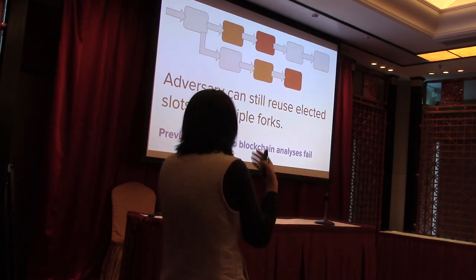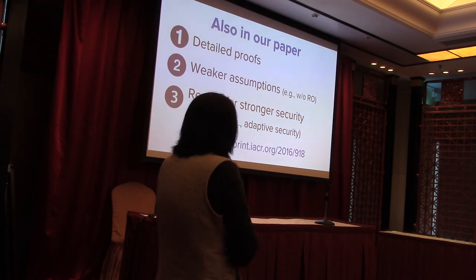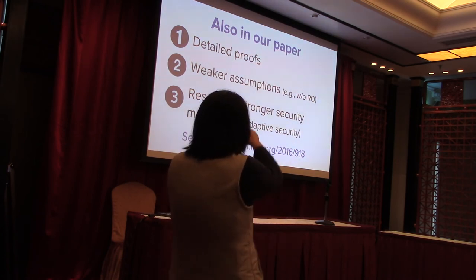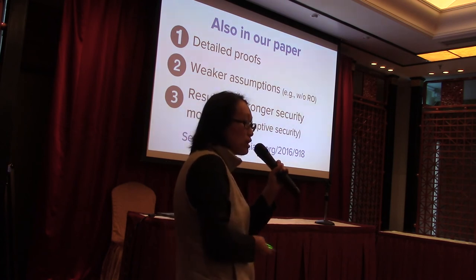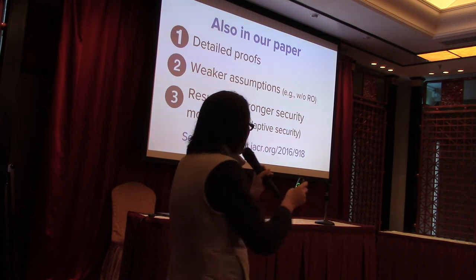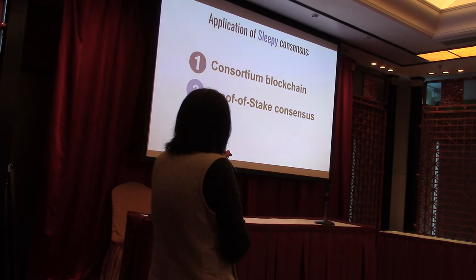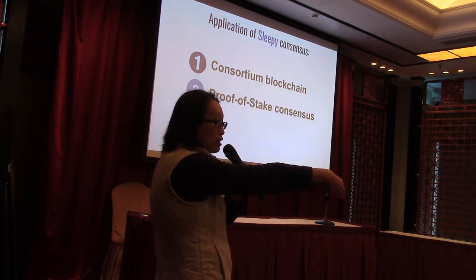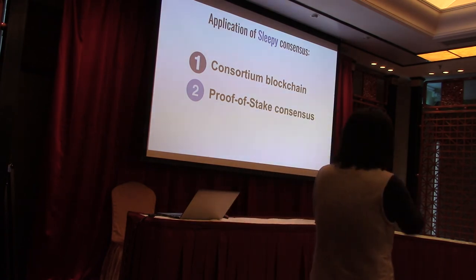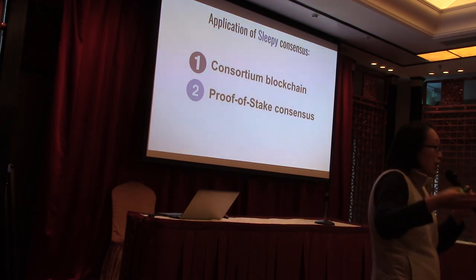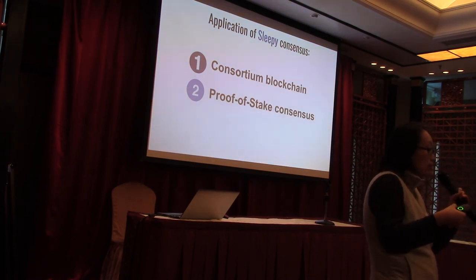The paper also contains additional results, like how to remove the random oracle assumption and how to achieve stronger notions of security — the protocol described here has only static security, but achieving adaptive security requires further work. Applications of the Sleepy consensus protocol include building a distributed ledger among multiple banks, and we also have another paper called Snow White, which takes the Sleepy consensus protocol and shows how to do robust committee reconfiguration over time to reflect the current stake distribution, obtaining a proof-of-stake protocol.